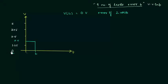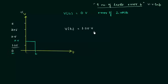So voltage at time t1: 2 volts is between 1.25 and 2.5. We take the lower value, which is 1.25 volts, instead of 0. The error is now reduced to 0.75 volts only. Earlier the error was 2 volts, but now the error is 0.75 volts.